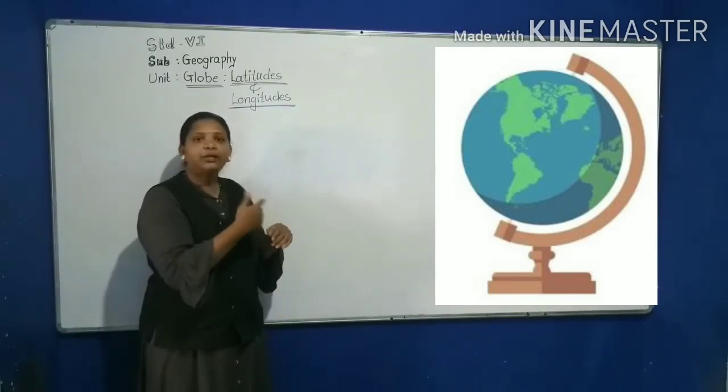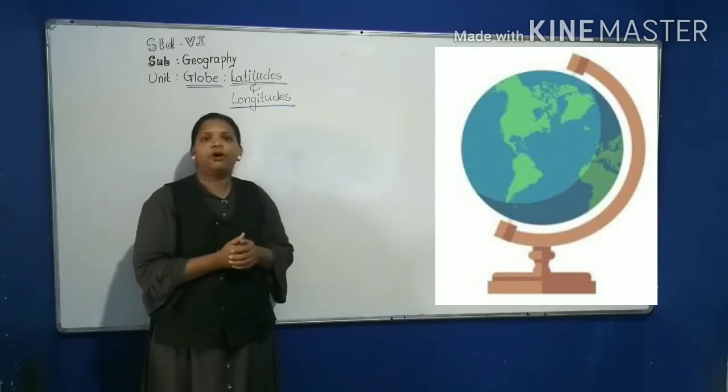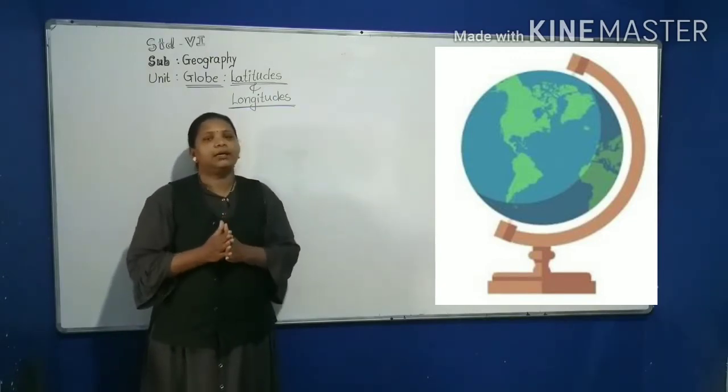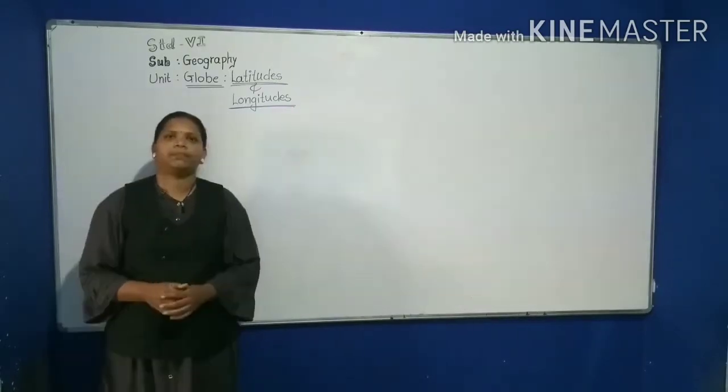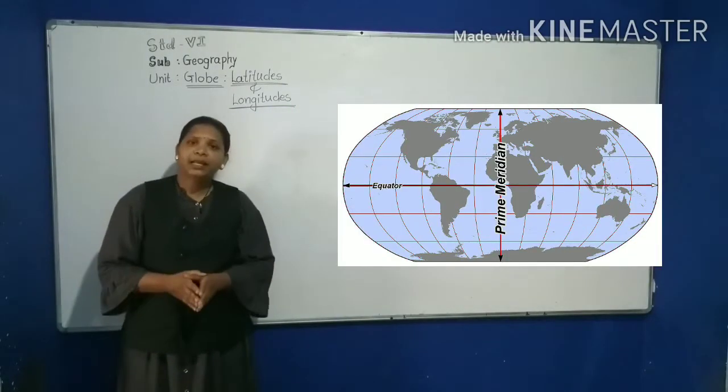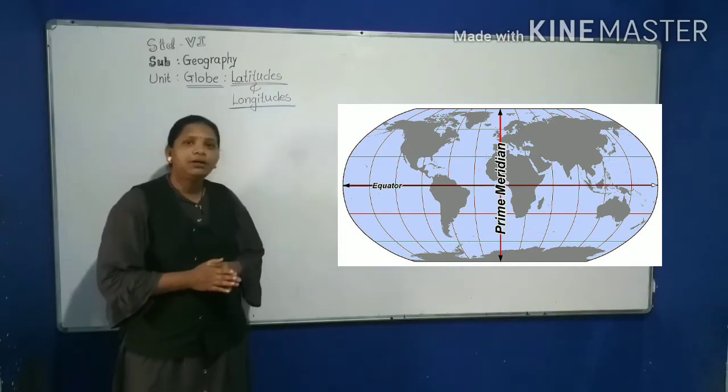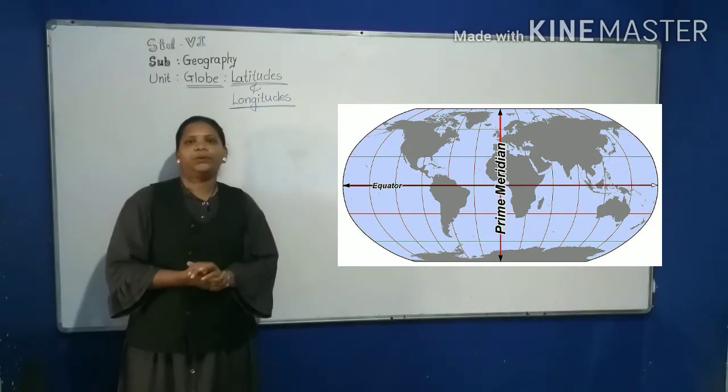We can rotate the globe around this needle from west to east, just as the earth rotates. The spherical representation of earth is called the globe.